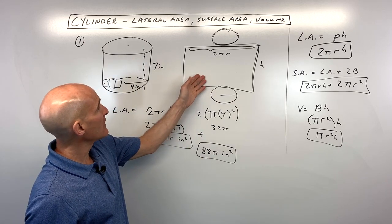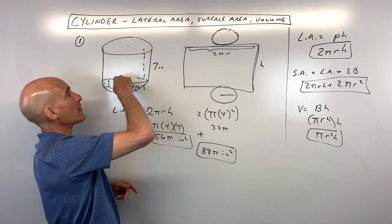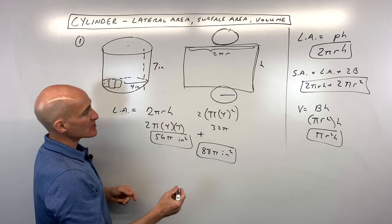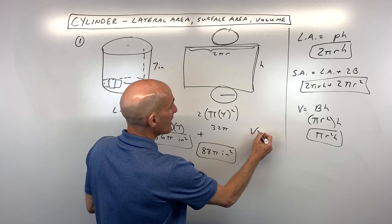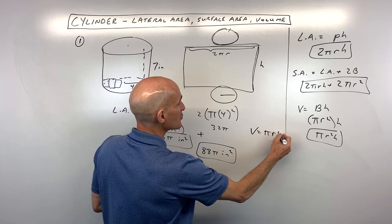Last part is finding the volume. That's like if you're going to fill this up with water, like this is a glass, how much would that contain? Well, we're going to do the area of the base, which is a circle, πr², times the height.